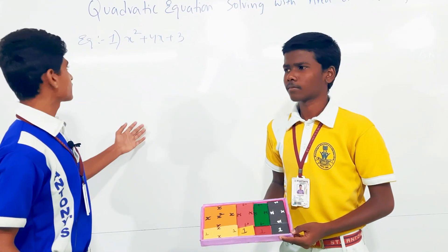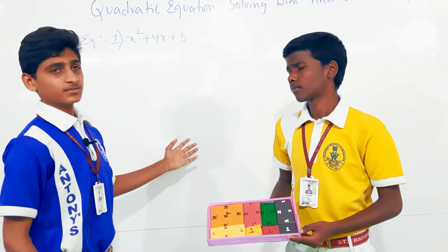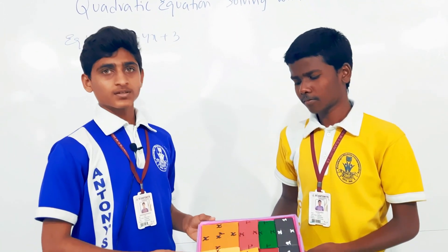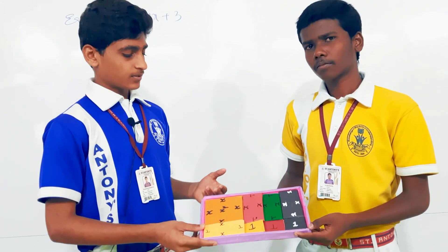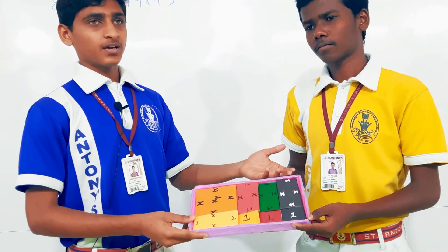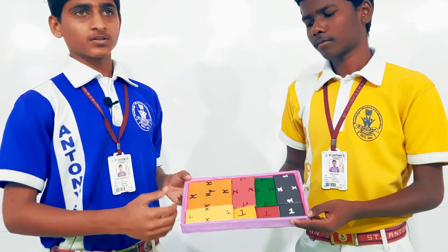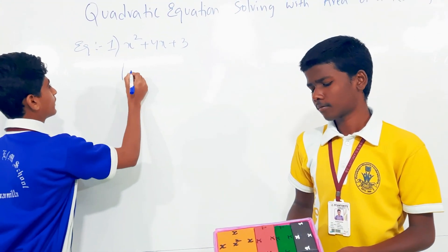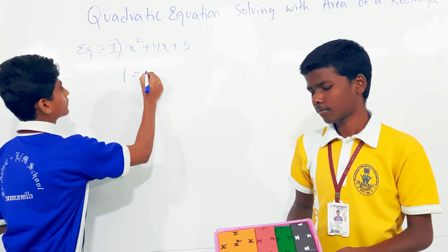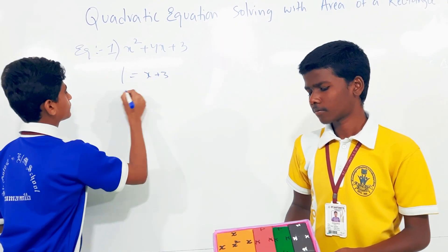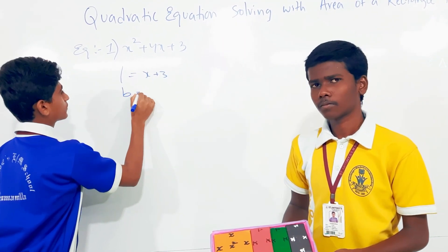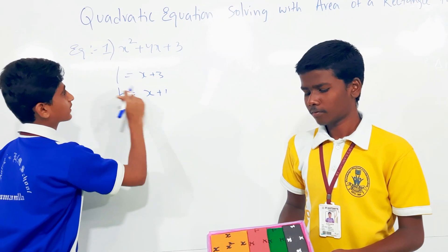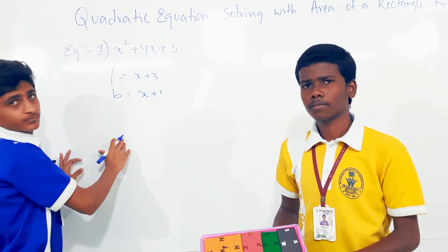For the equation x² + 4x + 3, the length is x + 3 and the breadth is x + 1. So L equals x + 3 and B equals x + 1. These are the factors of this quadratic equation.